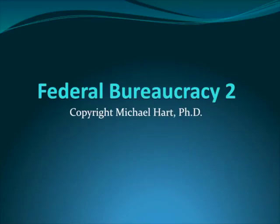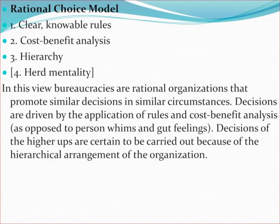To continue our theme of bureaucracy, we next turn to the various ways in which bureaucracy can be understood or seen. The first one is the rational choice model. According to this model, bureaucrats operate based on clear and noble rules. They also take costs and benefits into consideration before they decide on a given course of action. There is also a fairly strict hierarchy in a bureaucratic organization, with people at the top giving orders and those below them following it.